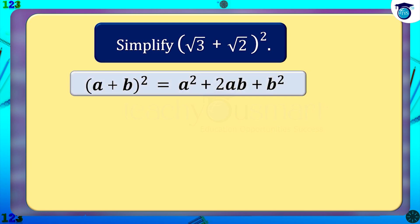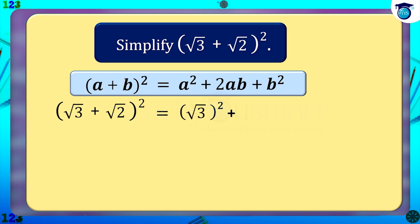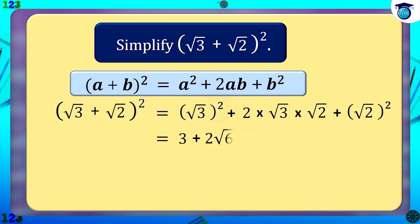Therefore, (√3 + √2)² equals (√3)² plus 2 multiplied by √3 multiplied by √2 plus (√2)², which equals 3 plus 2√6 plus 2, which equals 5 plus 2√6.